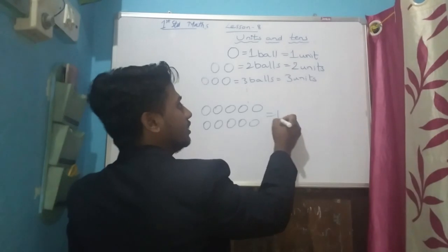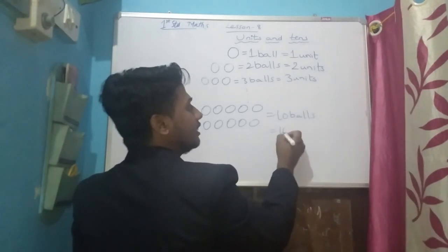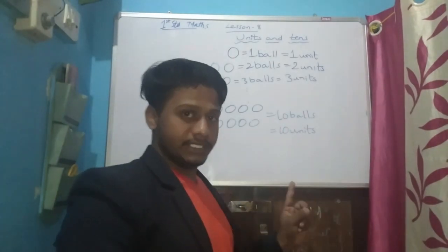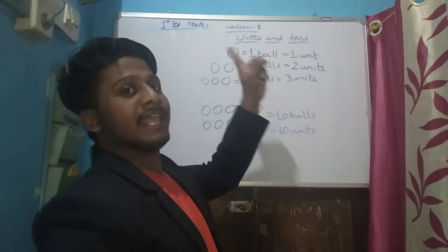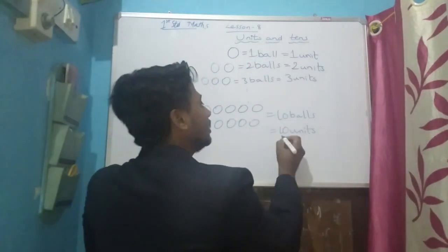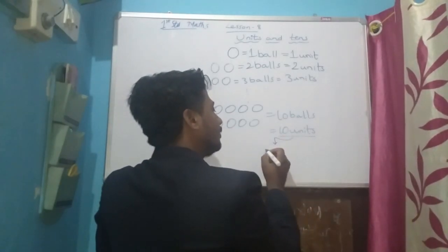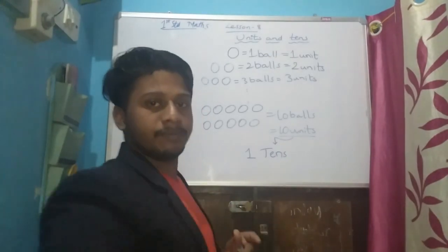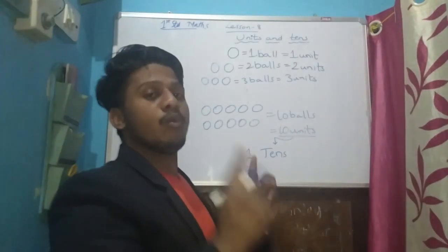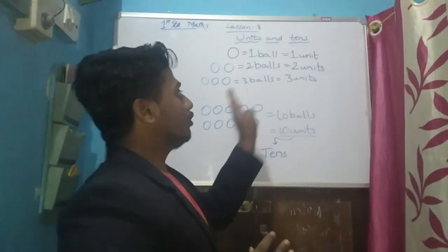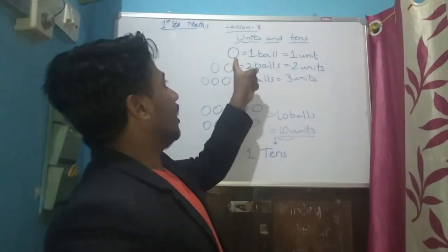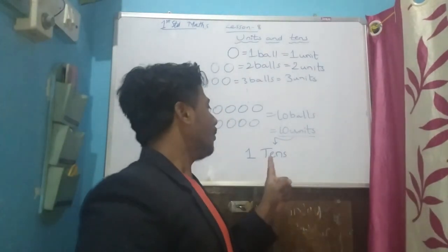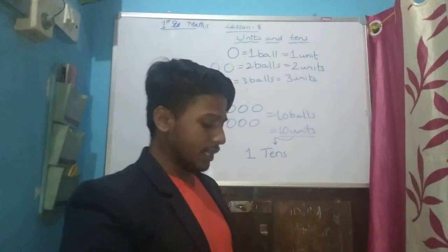Ten balls means how many units? Ten units. So ten units will form a group of ten. Ten units is equal to one tens group. Each object we count is considered as one unit, and a group of ten units will form one ten.